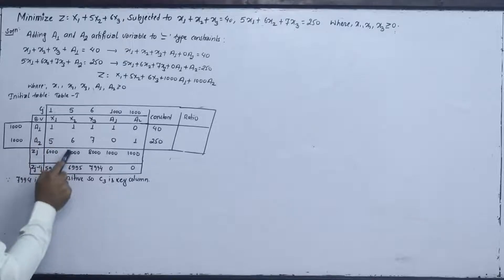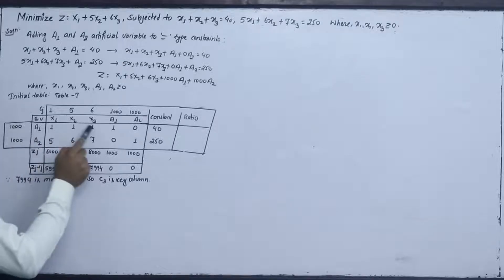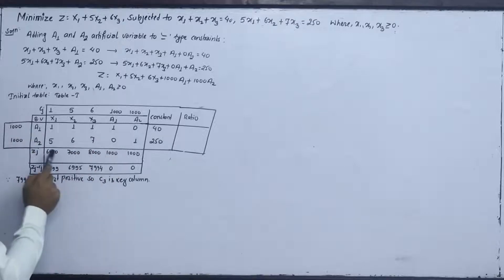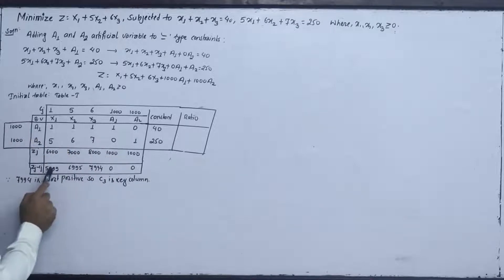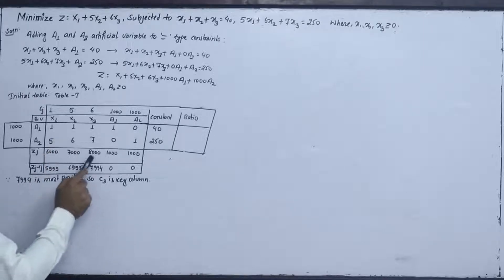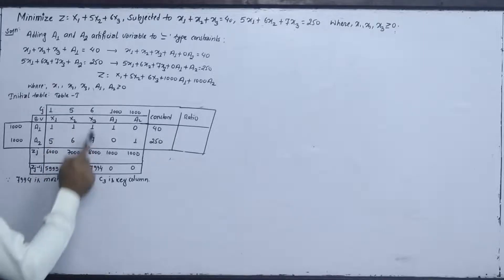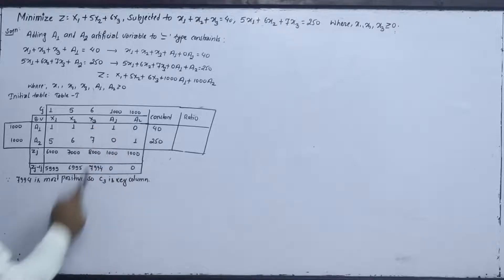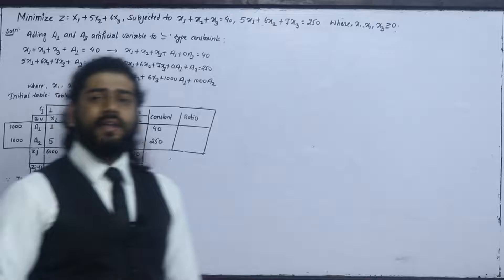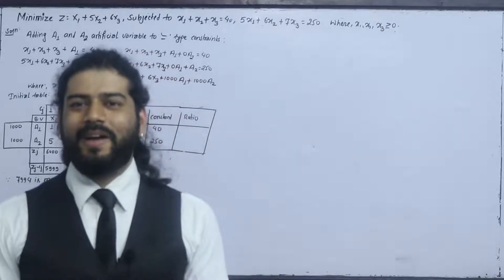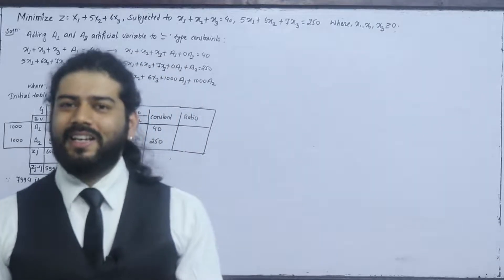From the base, we compute ZJ-CJ values. The results are: 1000 minus 5 equals 6995, 1000 minus 6 equals 6994, 1000 minus 1000 equals 0, and 1000 minus 1000 equals 0. For minimization, ZJ minus CJ must be checked — negative 0.